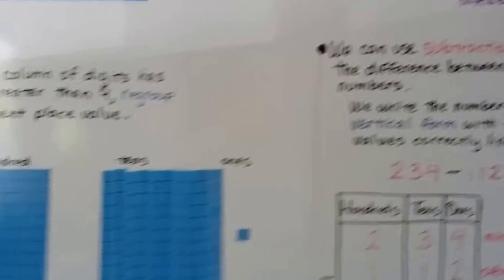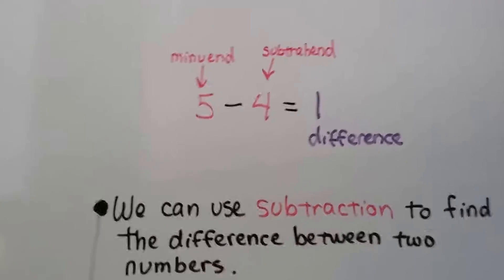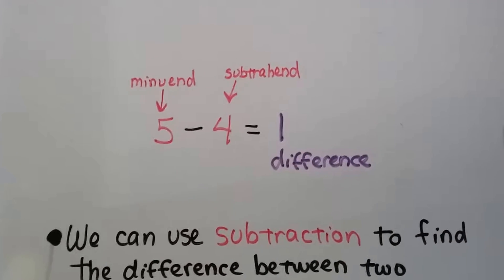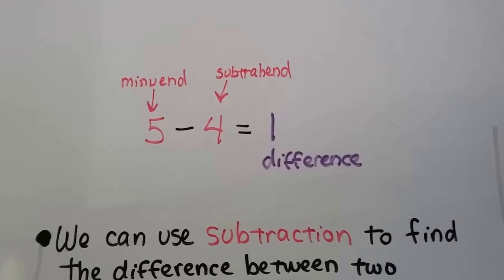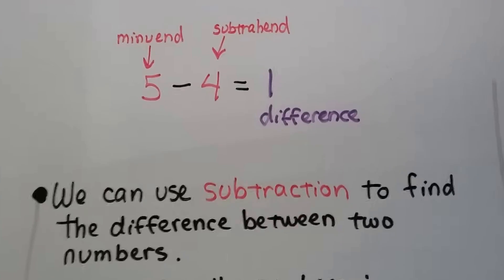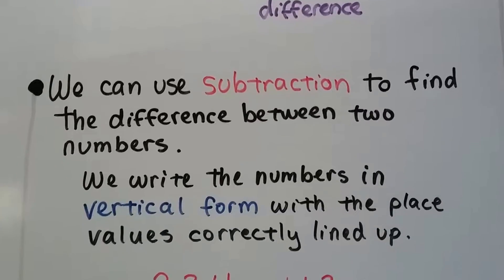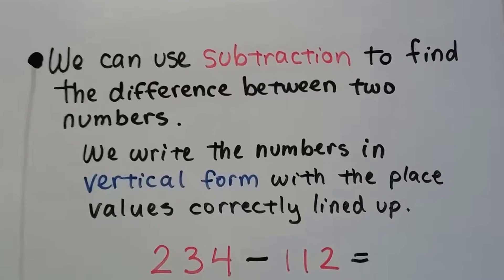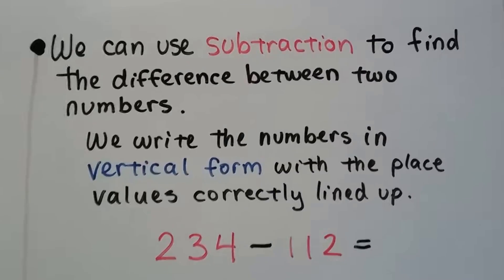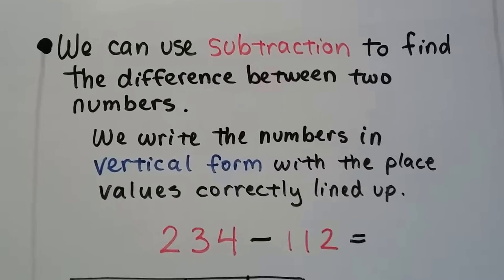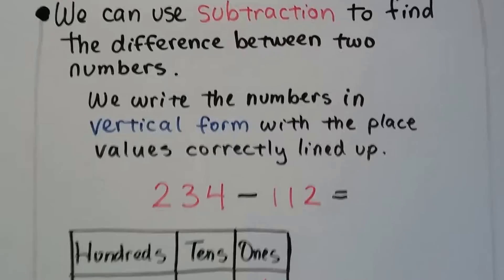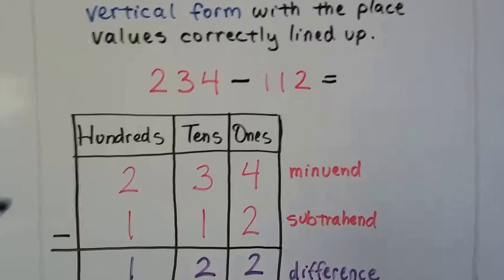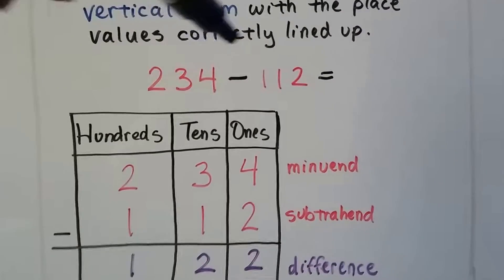We can do the same thing with subtraction. The first number is called the minuend and the number we're taking away is called the subtrahend and the answer is called the difference. And we can use subtraction to find the difference between two numbers. We'll write the numbers in vertical form again with the place values correctly lined up. So if we have 234 and we're taking away 112, we stack them up. Hundreds over hundreds, tens over tens, ones over ones.